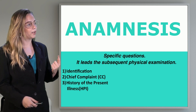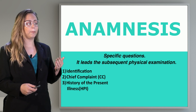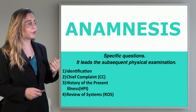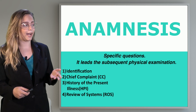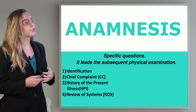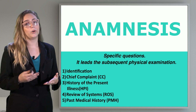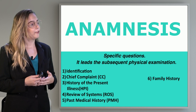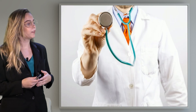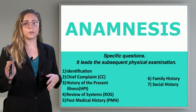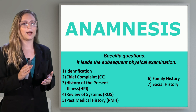We have to follow these steps in our anamnesis. The first one is the identification. The second one is the chief complaint. The third one is the history of the present illness, the HPI. We also have review of systems, past medical history, family history, and social history. Here we are going to study all of these steps.